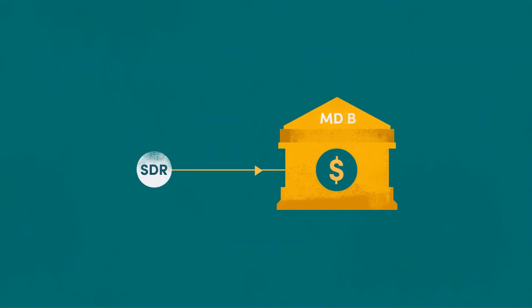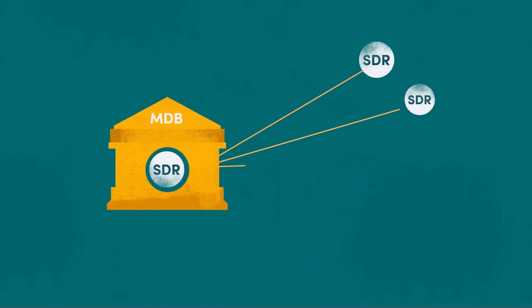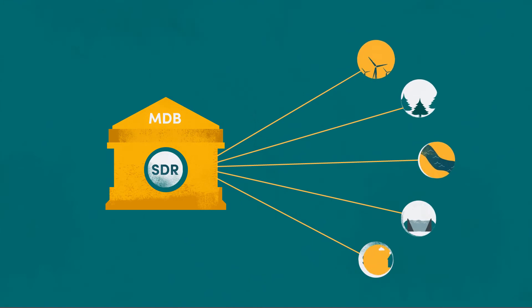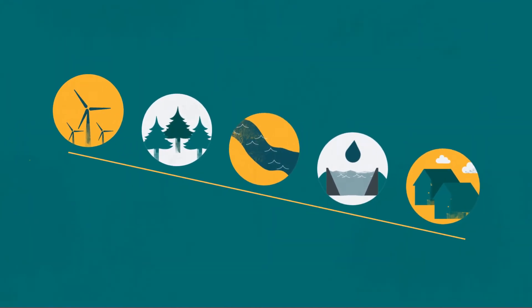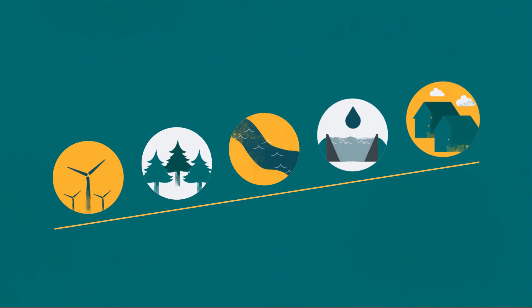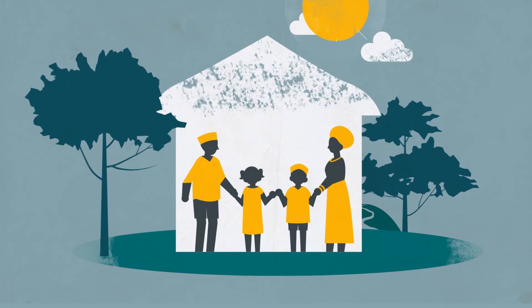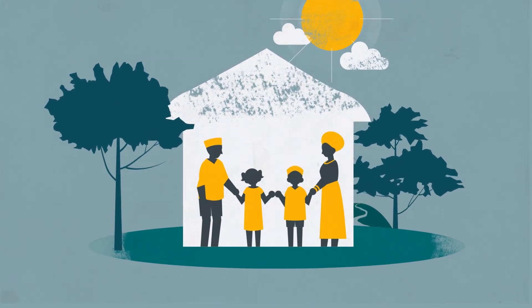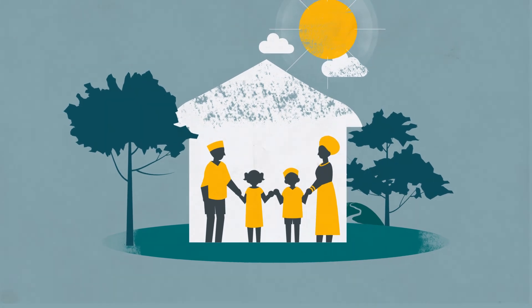If we integrate special drawing rights into the multilateral development banks, we can invest up to five times their amount, speeding the progress of climate change mitigation and adaptation while maintaining a stable balance sheet. The cost is low and the gains are exponential and may just mean our survival.